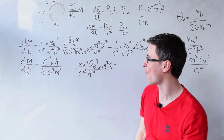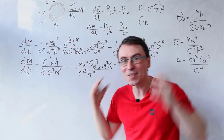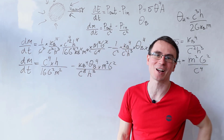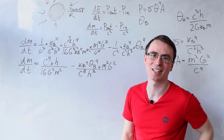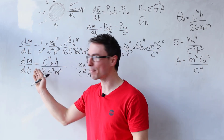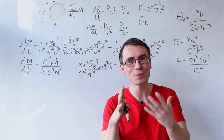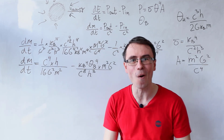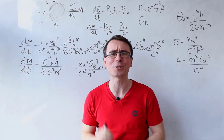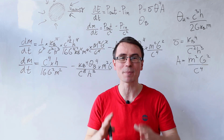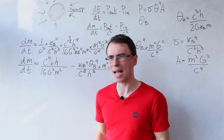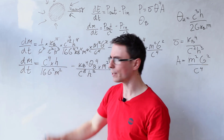This expression gives the rate of change of the mass of the black hole in terms of the cosmic microwave background radiation. At some point, the rate of change of the mass will reach zero — the black hole will be in thermal equilibrium.